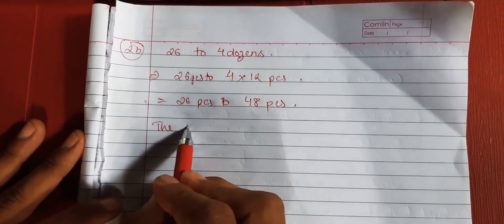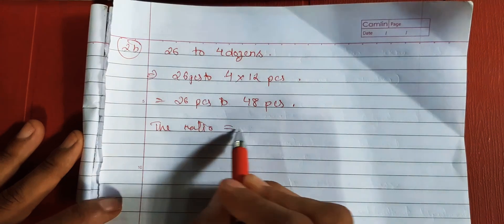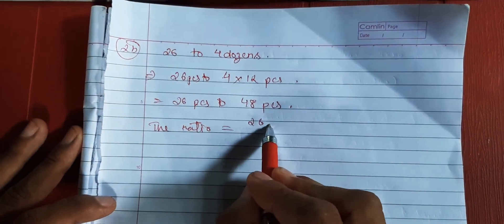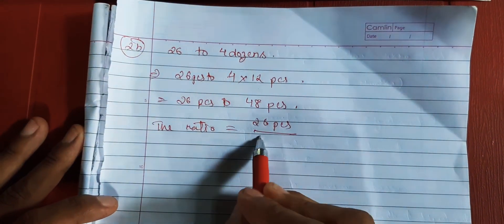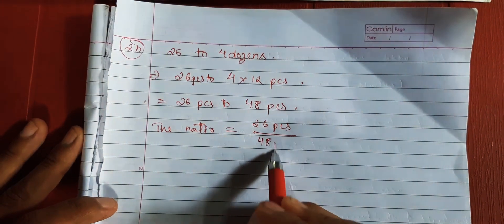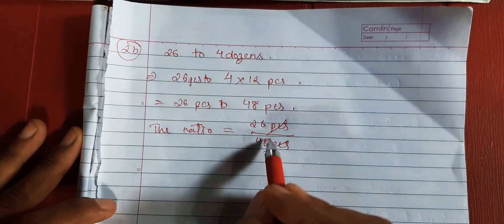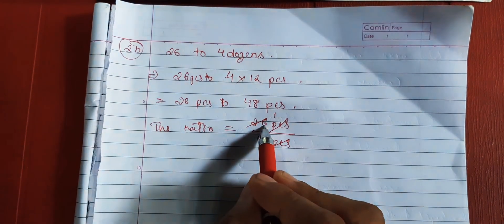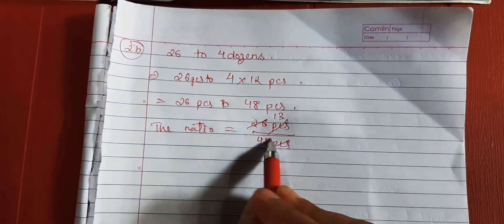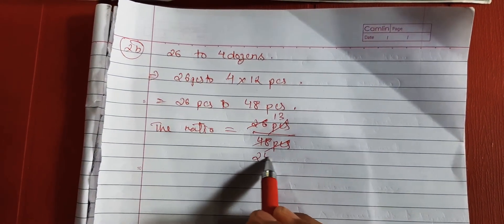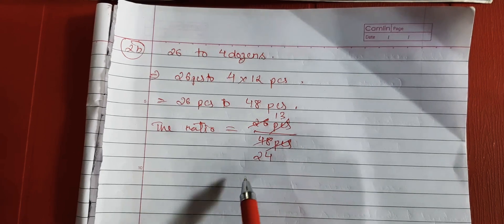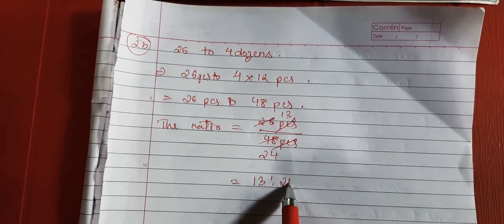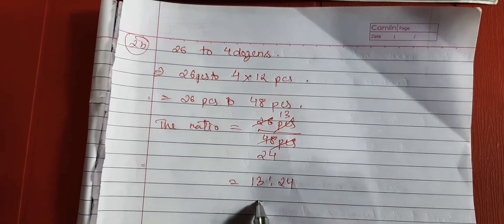We need to find the ratio, so we write it as a fraction. We can't cancel further. Two ones are 2, two threes are 6, two fours are 8. So our final ratio is 13 is to 24.